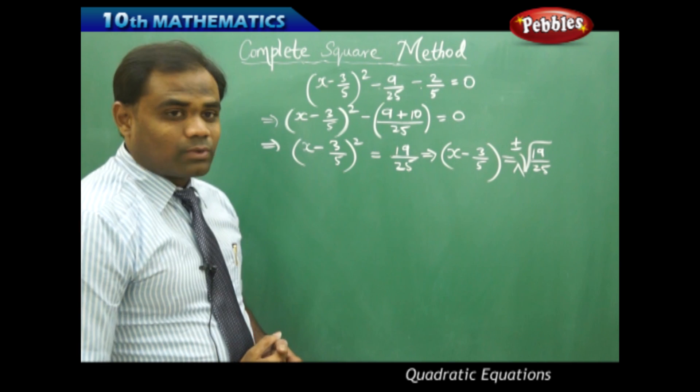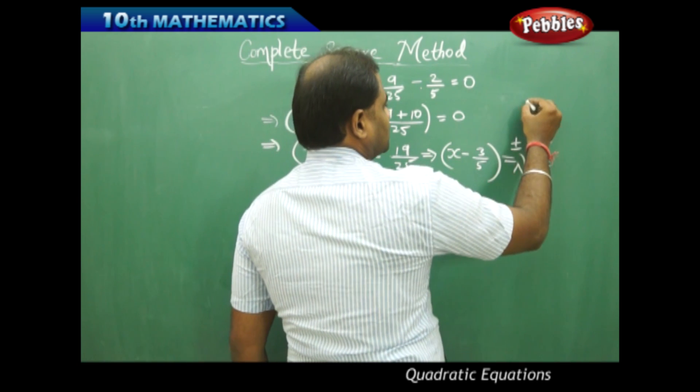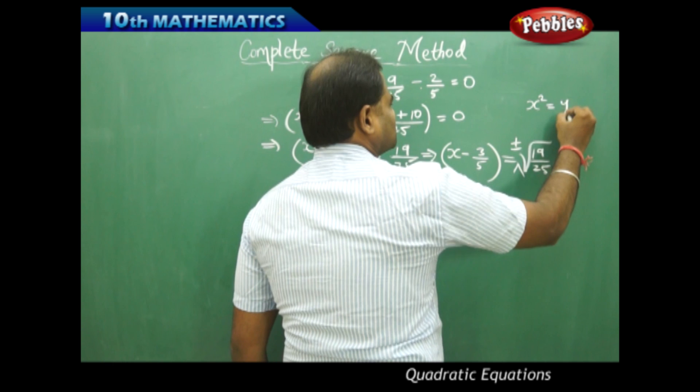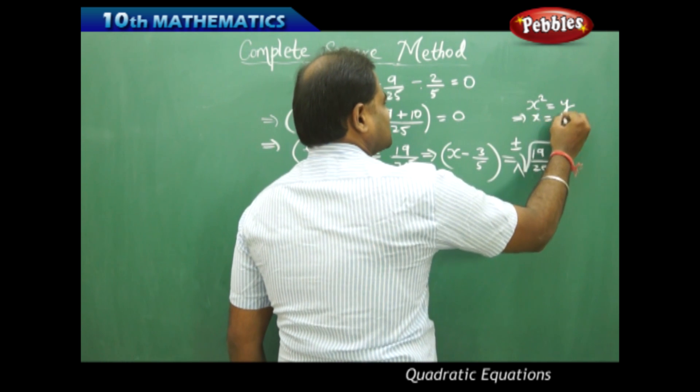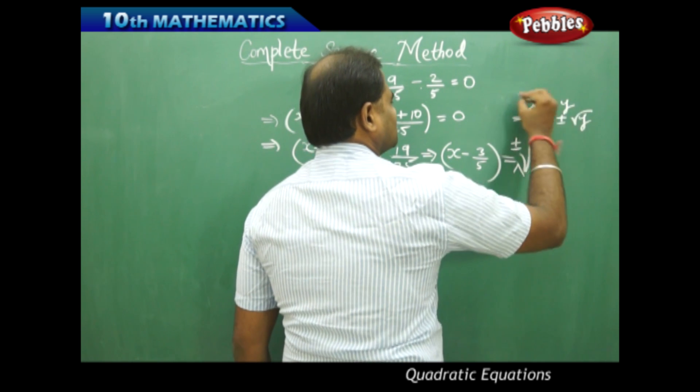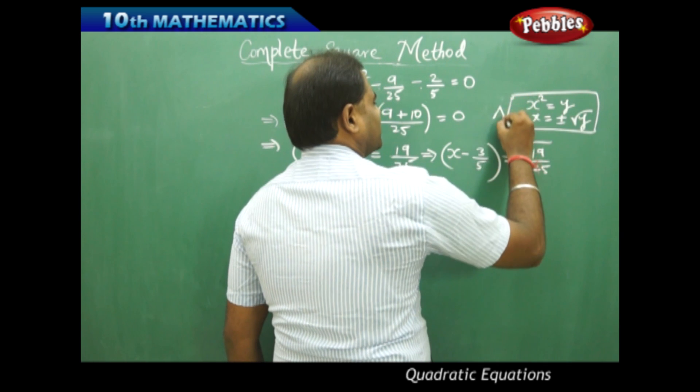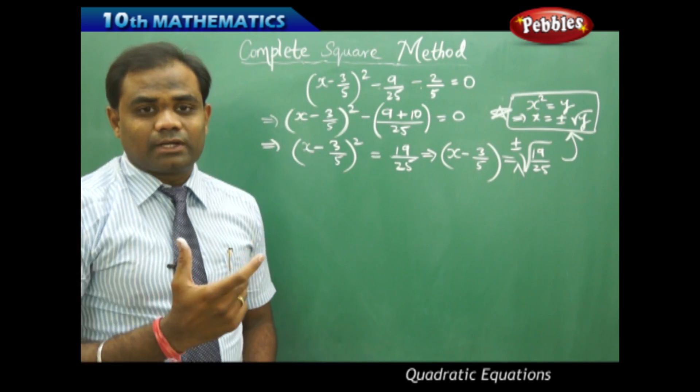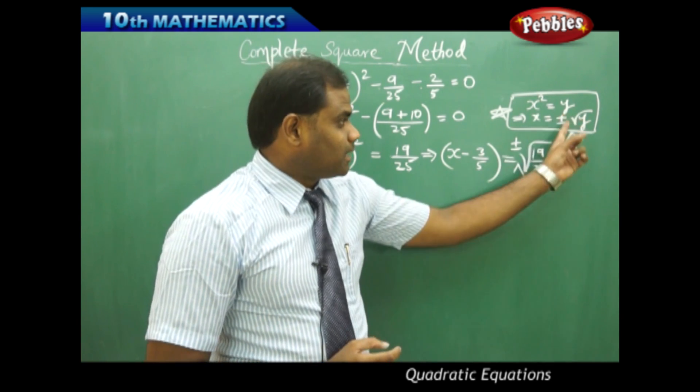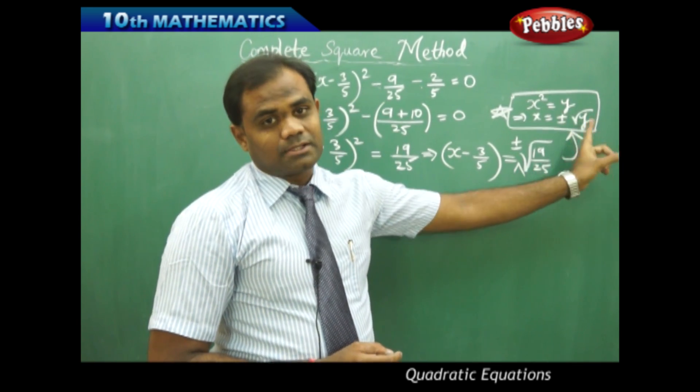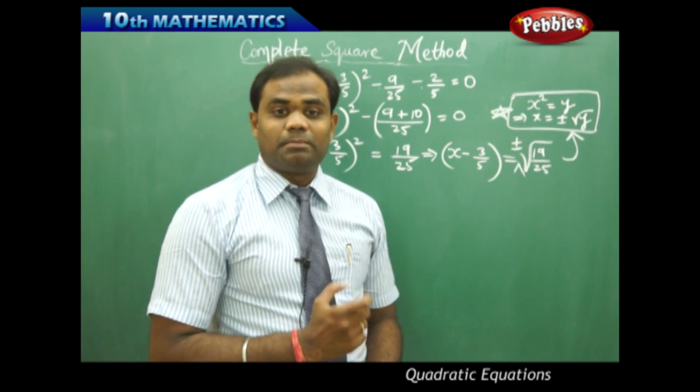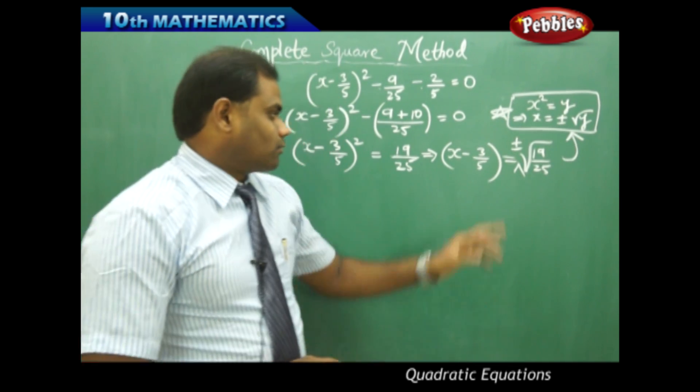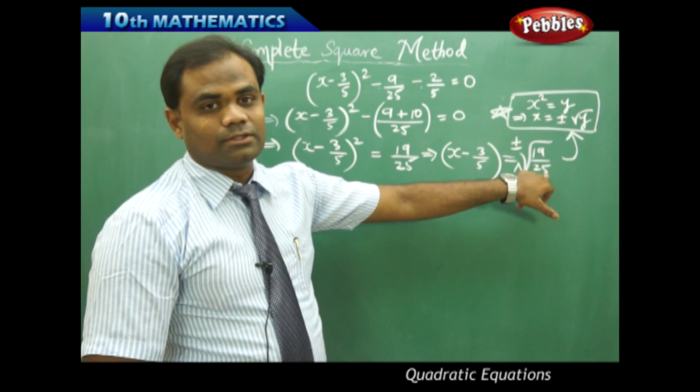When x² is y, x is plus or minus √y. Remember, x² = y implies x = ±√y is a very important formula. When x² is y, x is not √y but it is ±√y. Even the minus sign holds true along with the plus sign of √y, therefore I get ±√19 over 25.